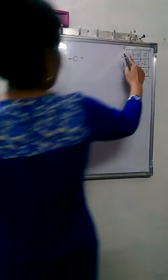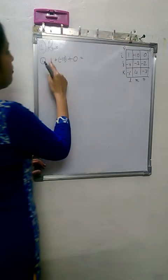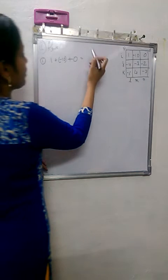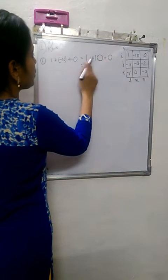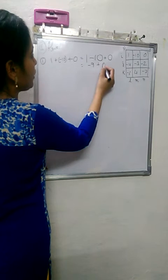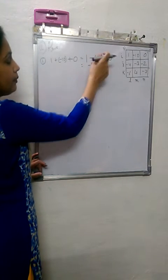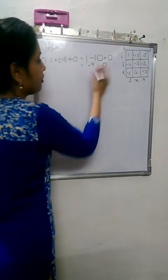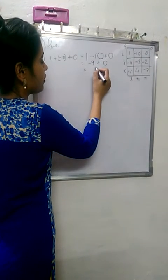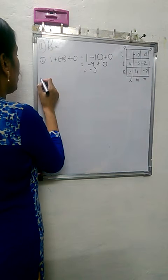Again, you have to find the sum. Plus into minus gives us minus and plus 0. So this is minus 9 plus 0. Plus minus will give us minus. Answer will be 10 minus 1. Answer will be negative because 10 is greater than 1. Minus 9 plus 0 gives us minus 9.